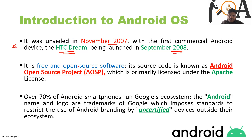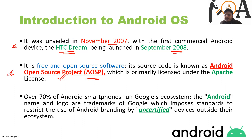Android is free and open source software. Its source code is known as Android Open Source Project, AOSP. Someone may ask: what is the name of the source code of Android? Android Open Source Project, AOSP — which is primarily licensed under Apache.